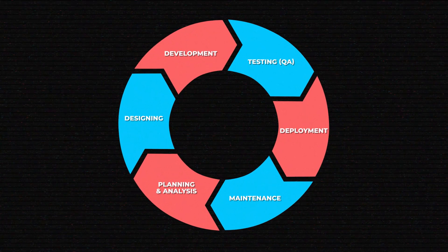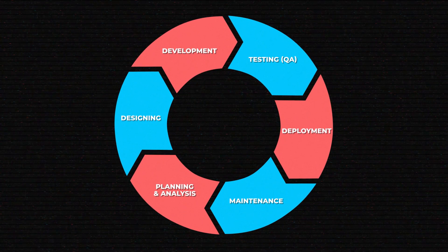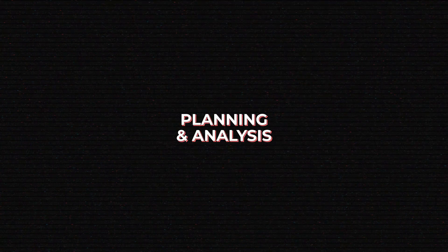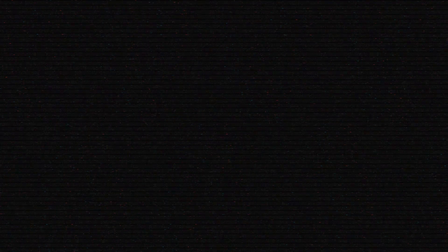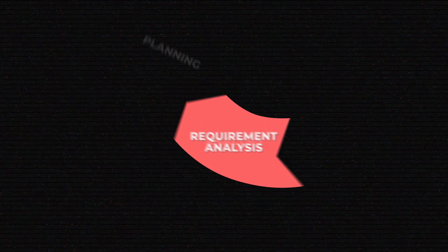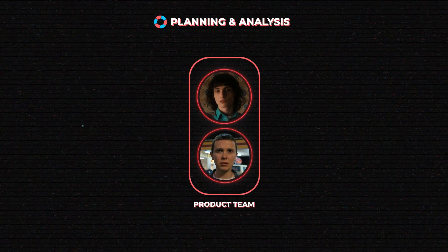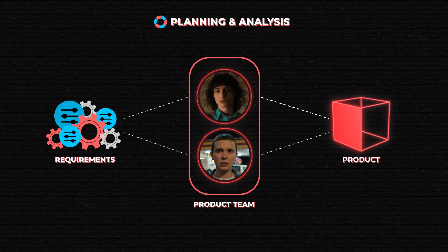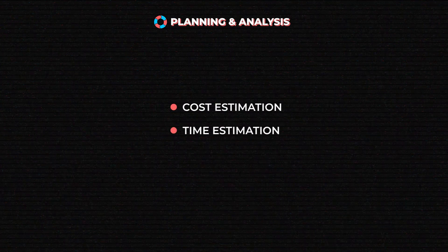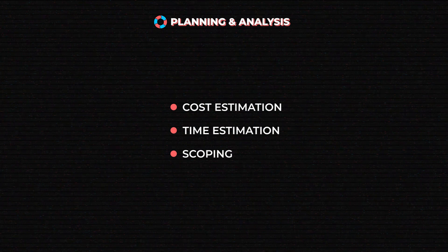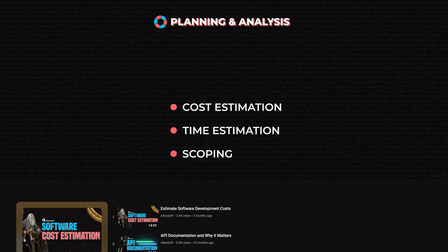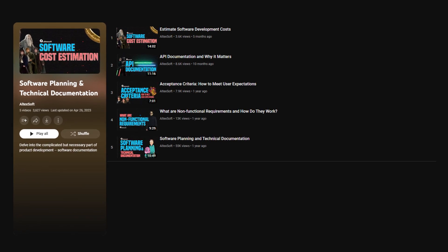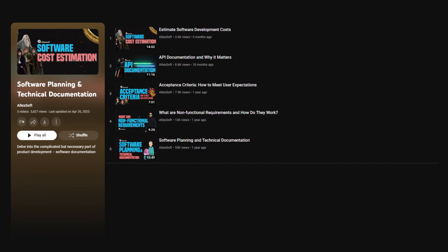There are generally six stages of software development covered in SDLC. The first is Planning and Analysis — sometimes also called requirement analysis, or with analysis as a separate stage. At this prolonged stage, the product team collects business and user requirements about what the final product must do and how it should work. Cost and time estimation, scoping, and other planning activities all go here.